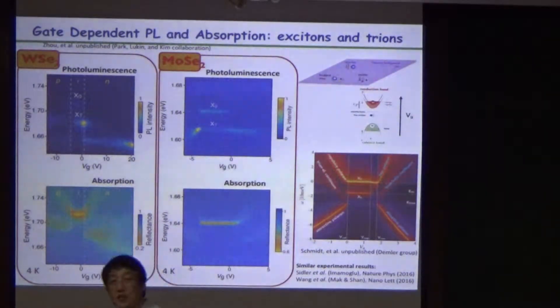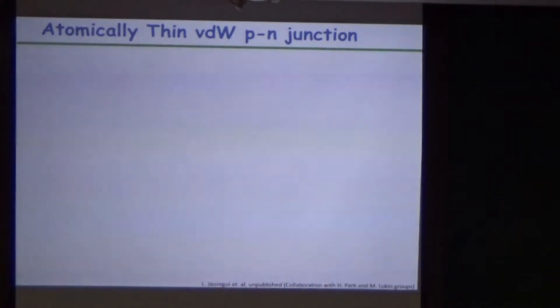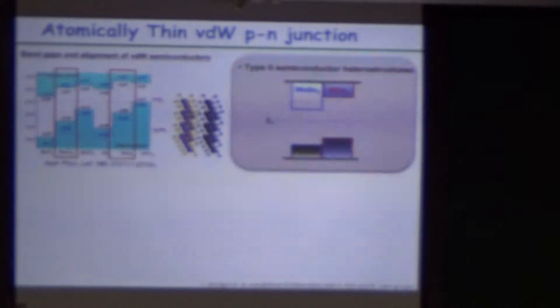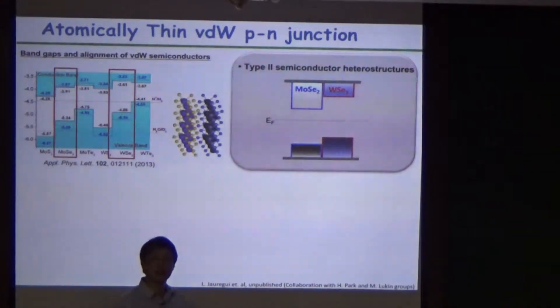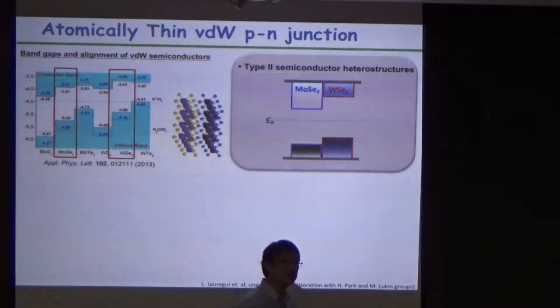I want to tie back the stories with the interlayer exciton I was talking about. If you choose P-type and N-type semiconductors and put them together, you can create very similar quantum structures, and they naturally make type-2 semiconductors by choosing the right semiconductor combination. In this case it's molybdenum diselenide and tungsten diselenide. Shine the light, you can create the exciton in each layer. But then that exciton quickly dissociates and creates the so-called interlayer exciton.